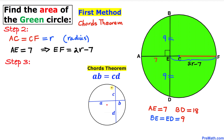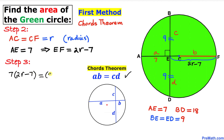Let's apply this theorem to our problem. Labeling the four parts as A, B, C, and D, we fill in the intersecting chords equation: A times B equals 7 times (2R minus 7), and C times D equals 9 times 9.